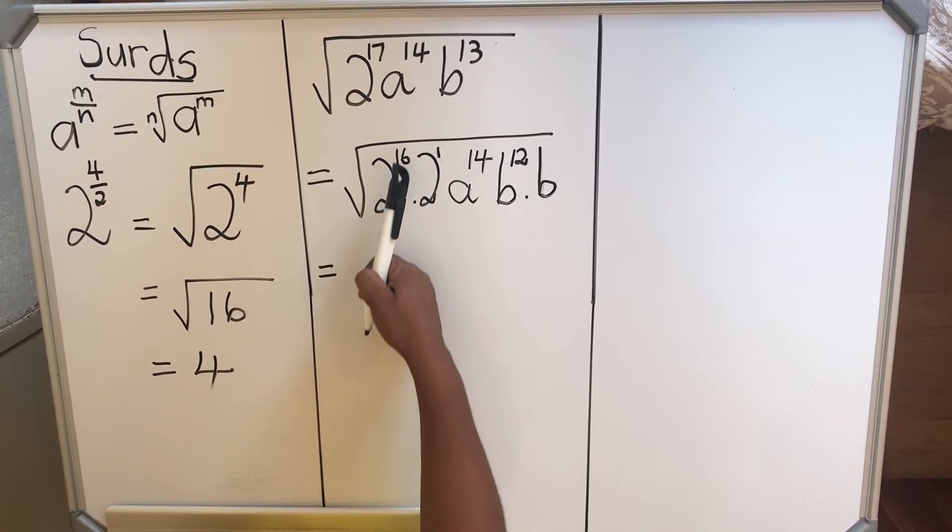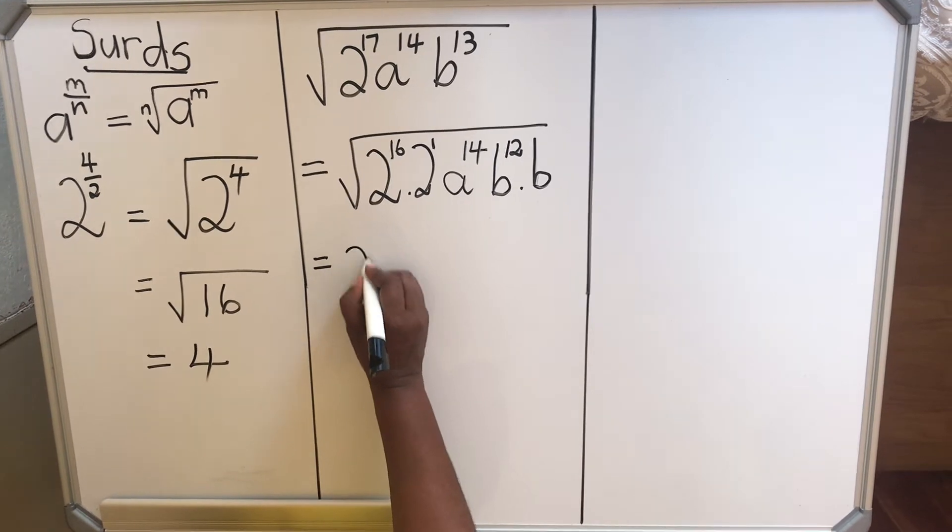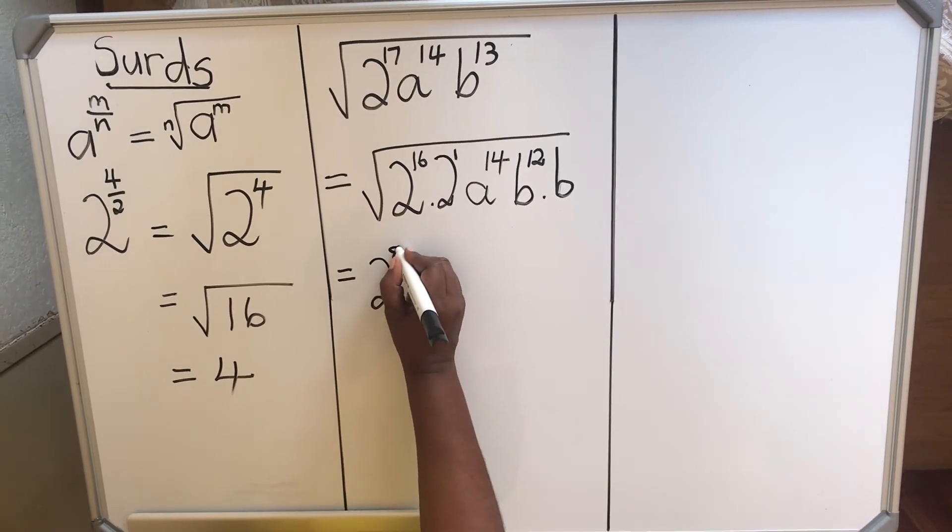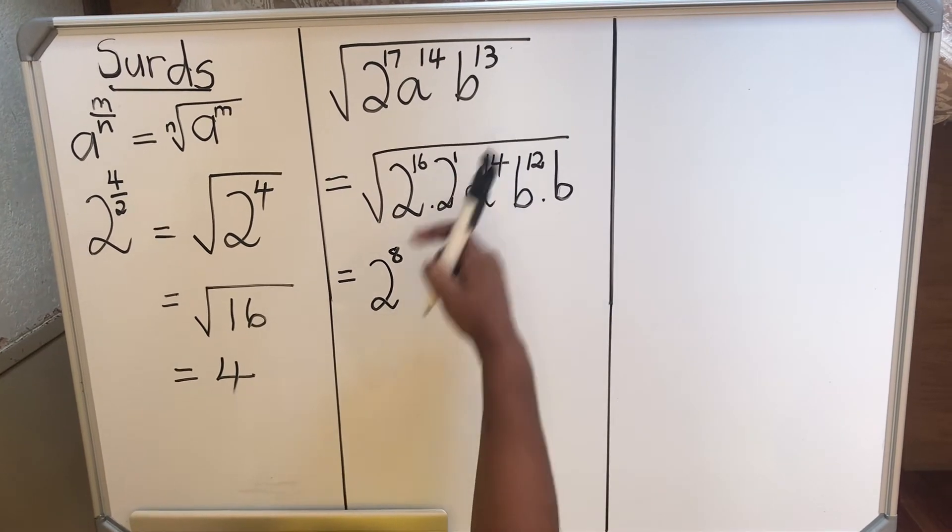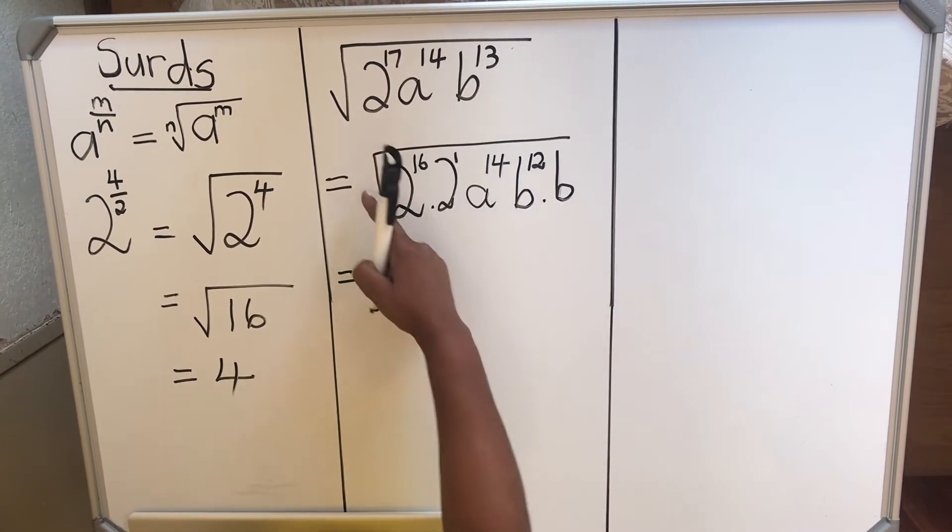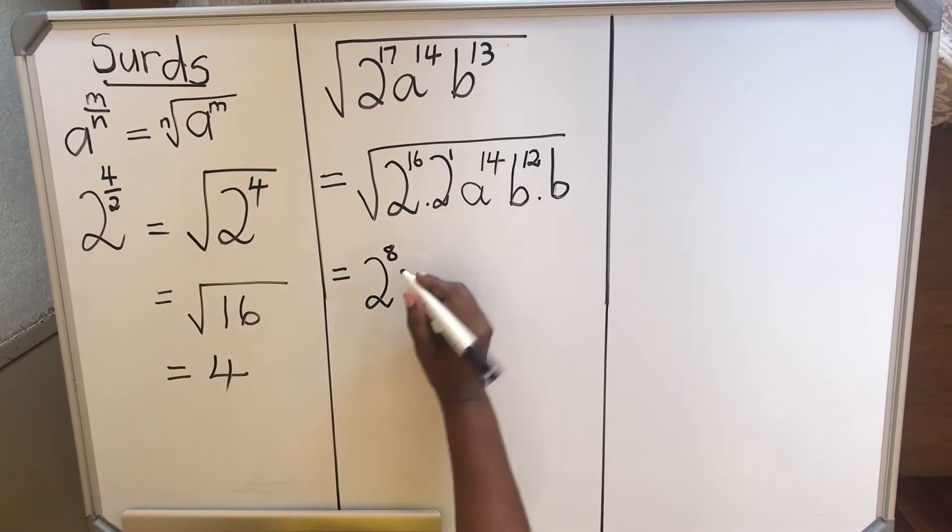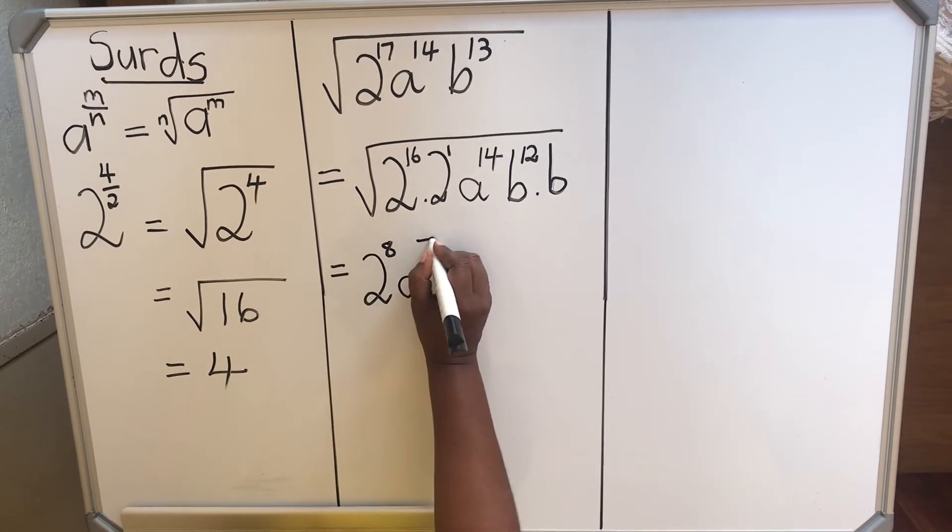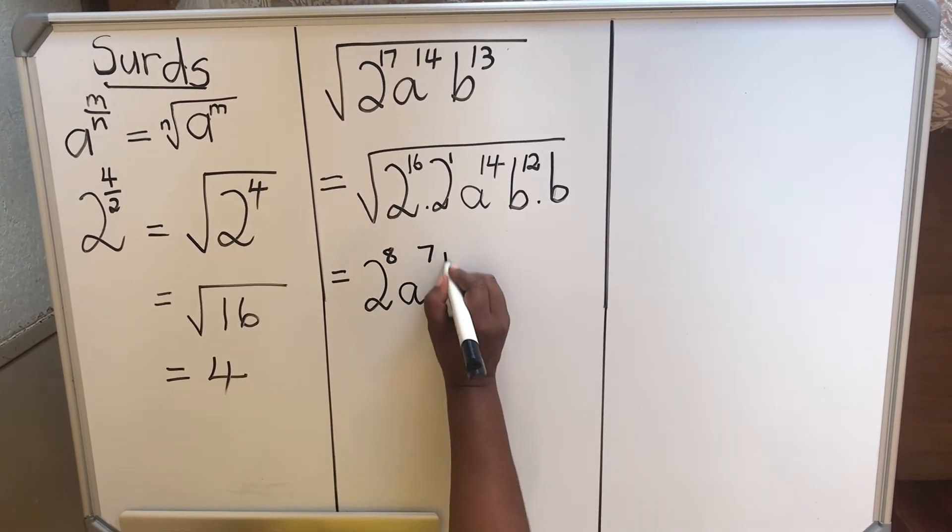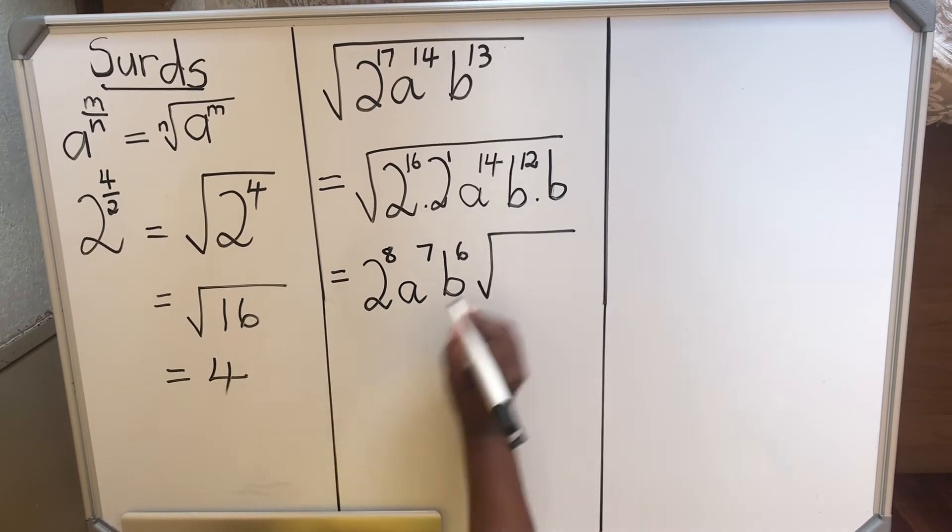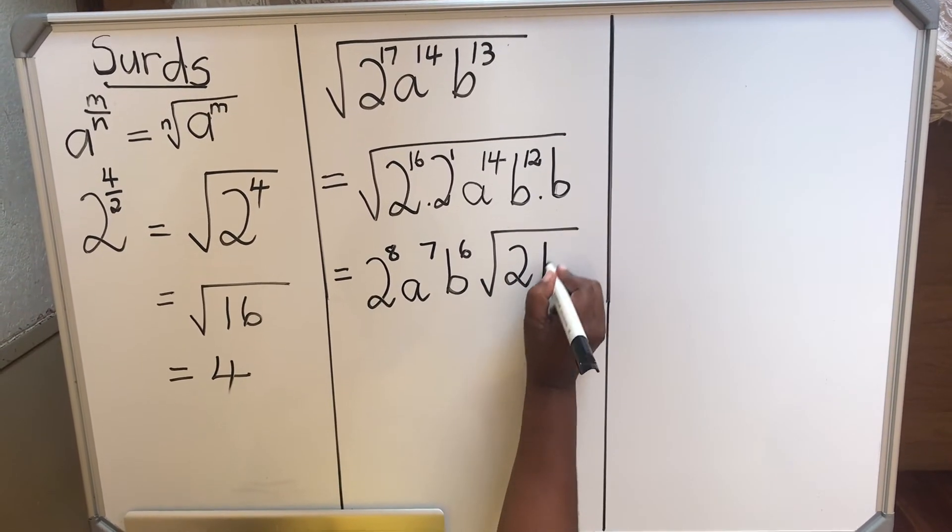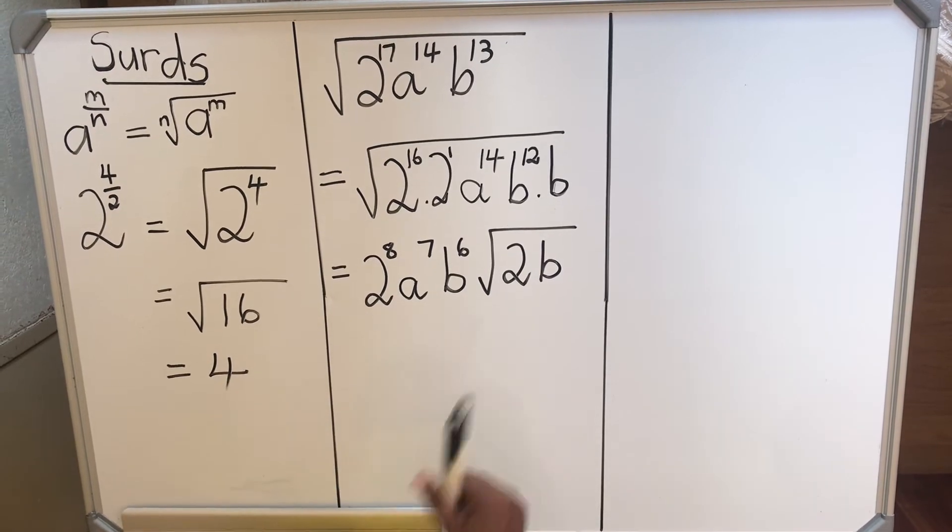Then, when you have 2 to the power 16, when you divide 16 by 2, you get 2 to the power 8. And then that 2 will stay under the radical because you can't divide, the 1 is not a factor of 2. And then you have a to the power 7, b to the power 6, and then under the radical you'll have 2 and b. So that's how we simplify that.